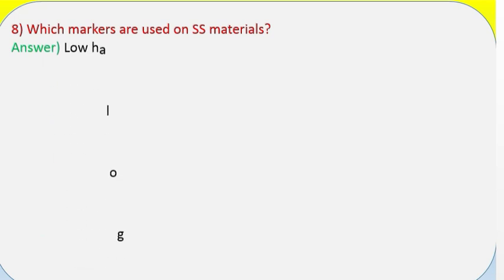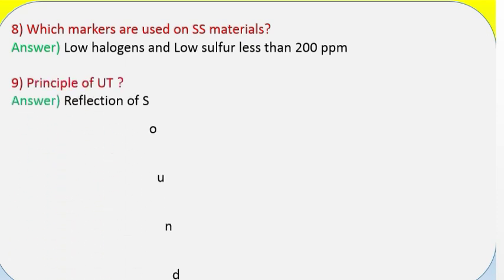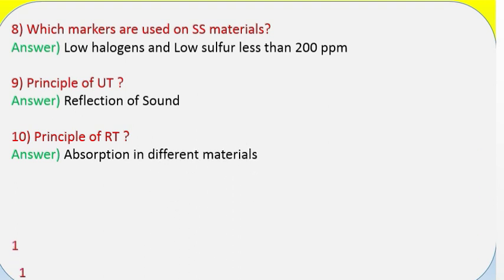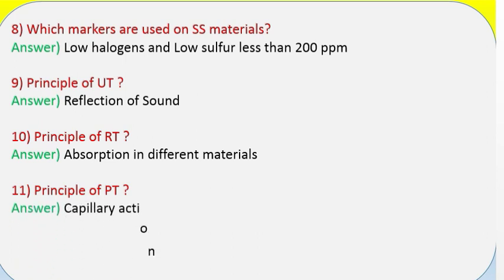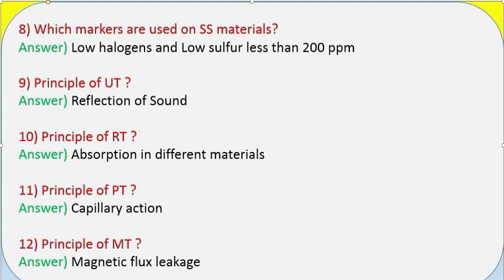Question 8: Which markers are used on stainless steel materials? Answer: Low halogens and low sulfur — less than 200 ppm. Question 9: Principle of UT? Answer: Reflection of sound. Question 10: Principle of RT? Answer: Absorption in different materials. Question 11: Principle of PT? Answer: Capillary action. Question 12: Principle of MT? Answer: Magnetic flux leakage.